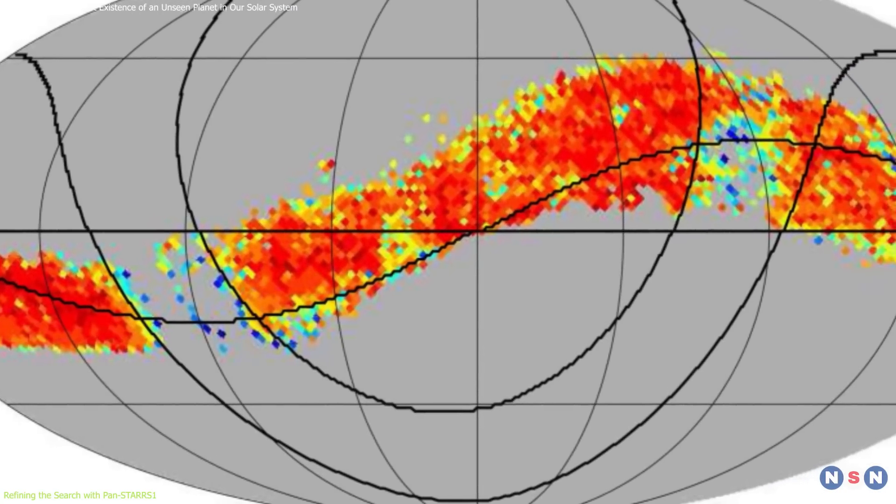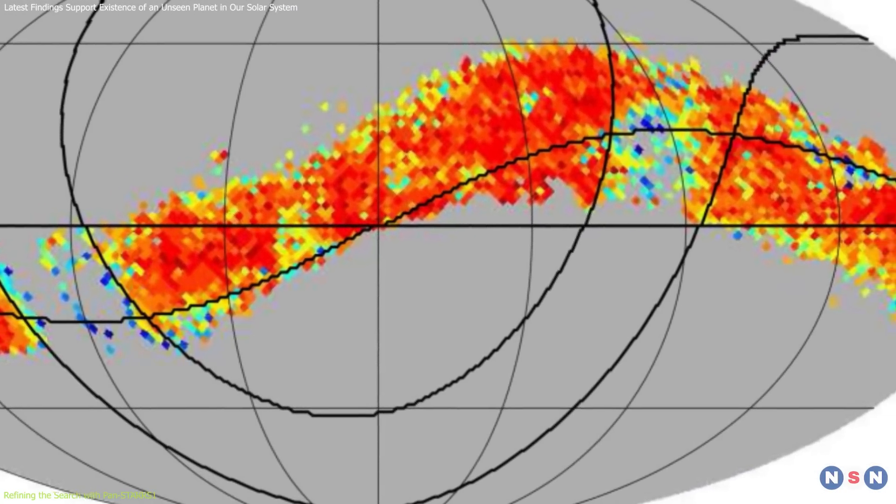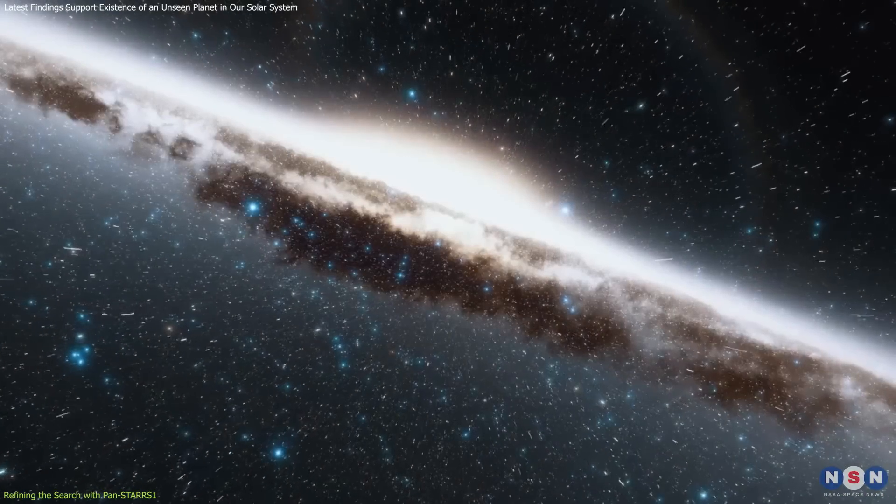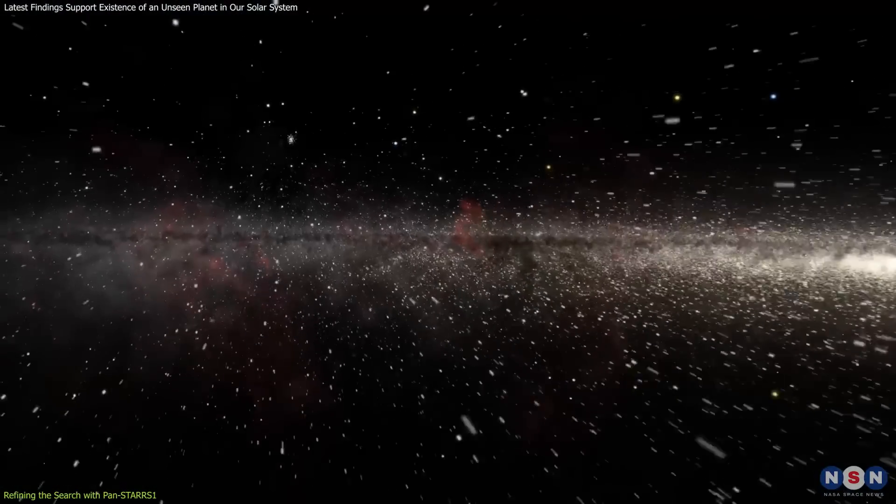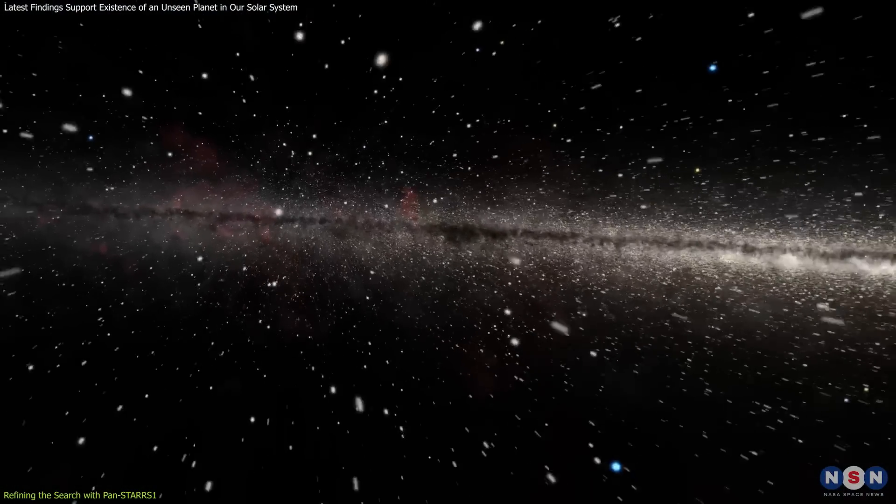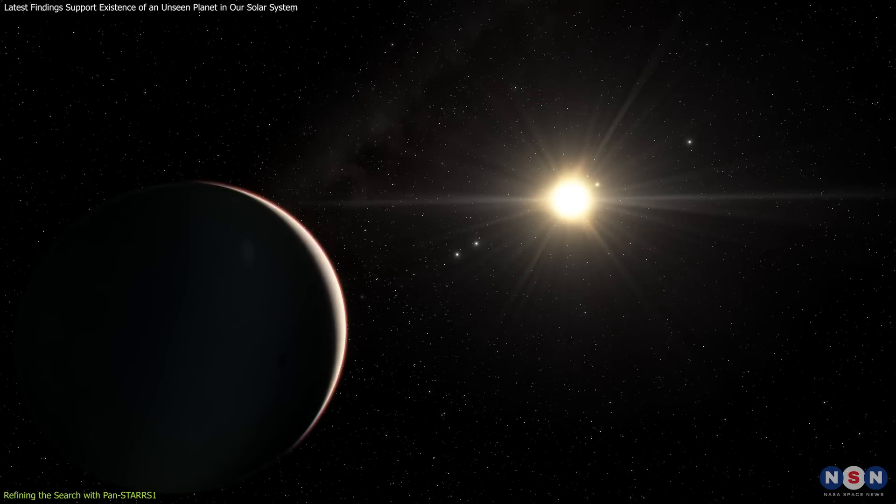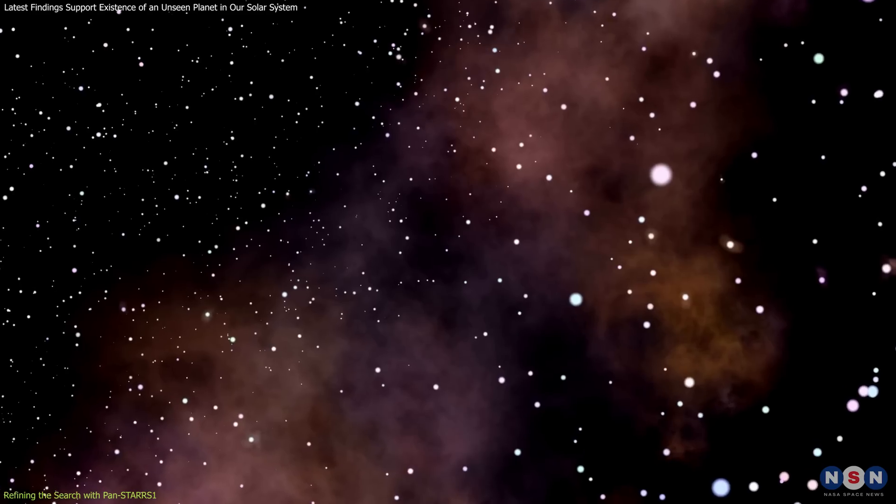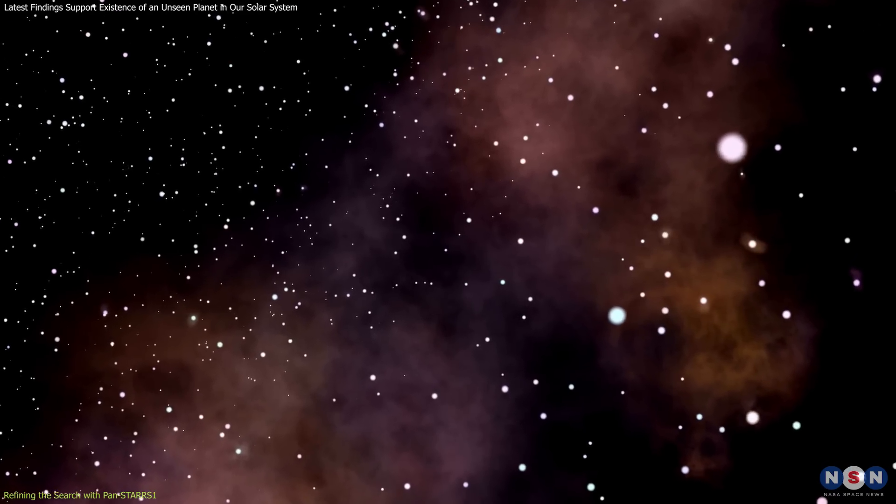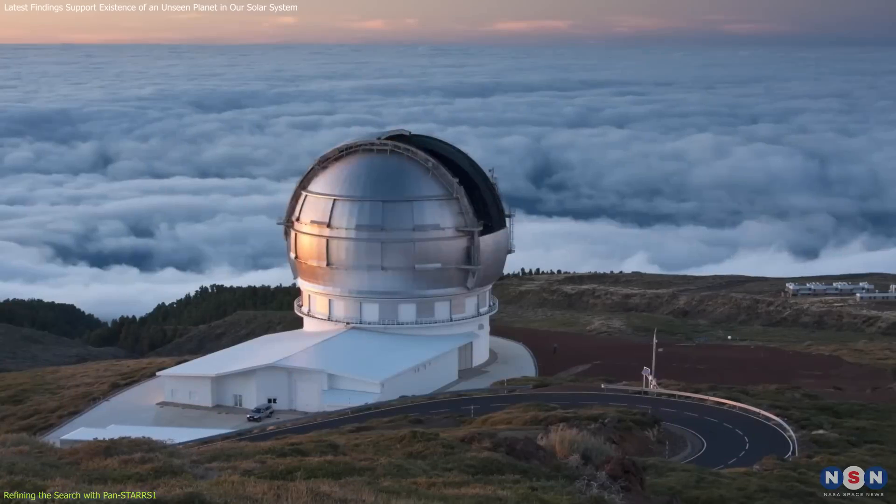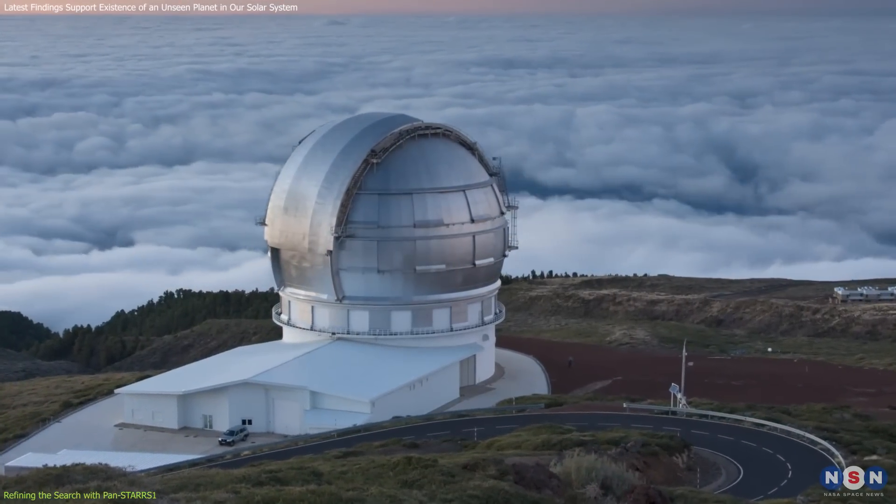The areas that remain of interest are particularly challenging for observation. These regions are near the galactic plane, where the density of stars significantly increases the difficulty of spotting faint objects like a distant planet. The interference caused by the crowded star fields and the interstellar medium can obscure the weak signals that telescopes try to capture.